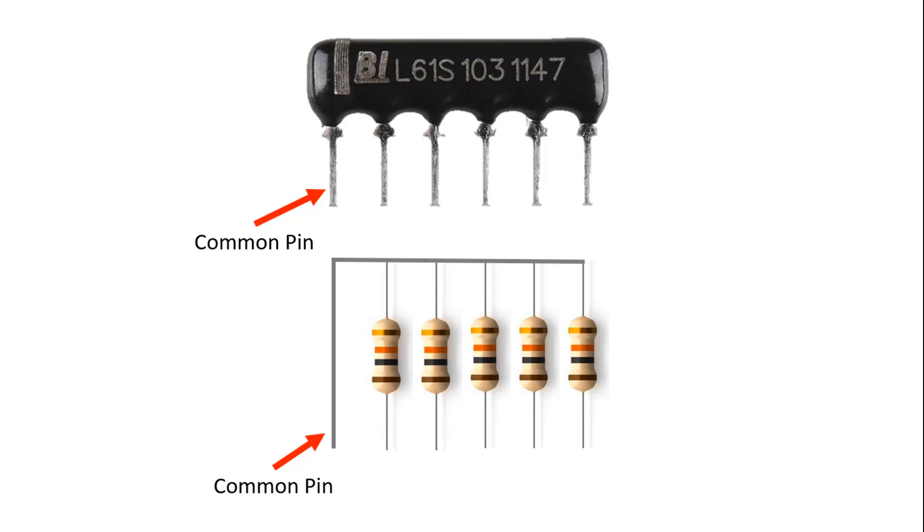For example, in the integrated resistor you see here, there are 5 resistors with a value of 10 kilo ohm aligned side by side.